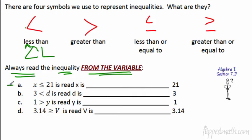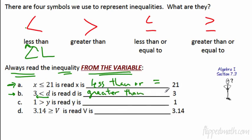So if your teacher's talking about symbols and reading left to right, these are the signs they mean. But we always read from the variable. The first one: X is less than or equal to 21. For B — read from the variable D — the alligator's eating the D, so D is greater than 3. For C: Y is less than 1. And the last one: V is less than or equal to 3.14. Reading from the variable helps you graph correctly.